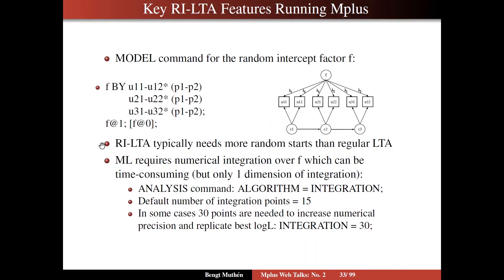RILTA typically needs more random starts than regular LTA. ML estimation requires numerical integration over this factor F. Numerical integration can in principle be time-consuming, but in this case we have only one dimension of integration — namely one factor. This is like the combination of a continuous latent variable and categorical observed variables as in item response theory, where you also use numerical integration. In the analysis command, we add algorithm equals integration, and the default number of integration points is 15, but in some cases you need more points — perhaps 30 — to increase numerical precision and be able to replicate the best log likelihood.